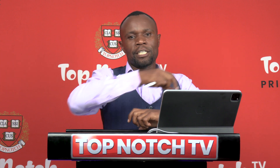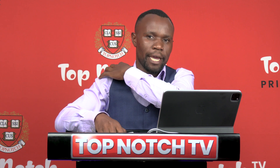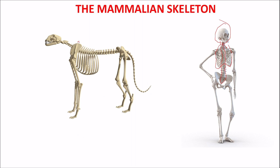The forelimbs are attached to our axioskeleton by bones especially in the shoulder region that we call the pectoral girdle. The main bone that is very visible and part of the pectoral girdle is what we call the scapula. That forms the pectoral girdle.